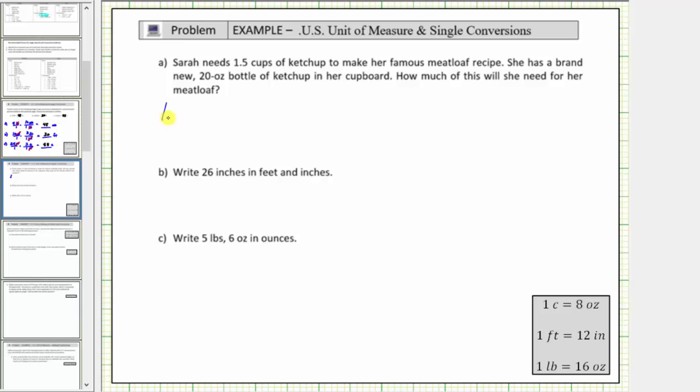So we begin with 1.5 cups, which we write as a fraction with a denominator of one, multiply it by a unit fraction, it will convert cups to ounces. To form the unit fraction, we use the conversion 1 cup equals 8 ounces.